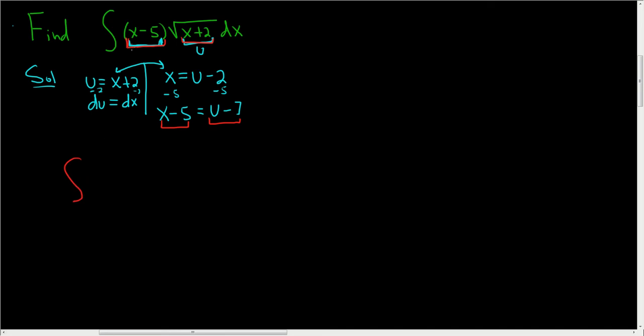So x minus 5 will become u minus 7 times the square root of u, du. We have to distribute the square root of u to finish. So let's first rewrite the square root of u as u to the 1 half. So this is u to the 1 half du. And now we'll distribute.